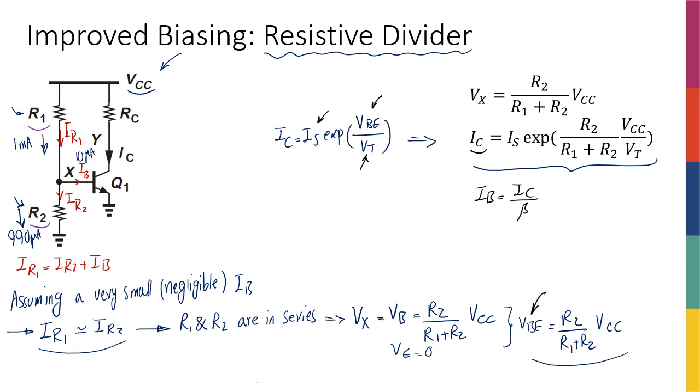So this way, my collector current, which Gm and everything else is actually dependent on it, everything else in my small signal analysis is dependent on it,